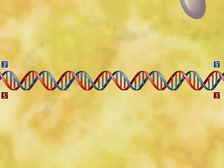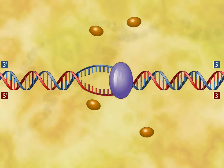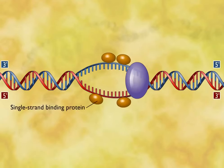The replication of DNA begins at a sequence of nucleotides called the origin of replication. Helicase unwinds the double-stranded DNA helix and single-strand binding proteins react with the single-stranded regions of the DNA and stabilize it.